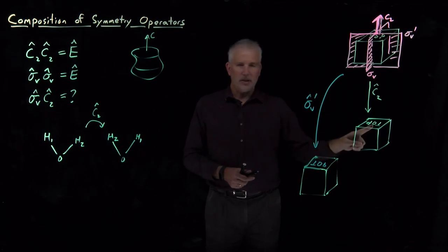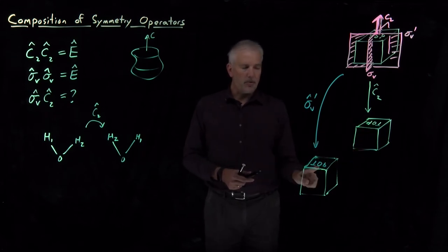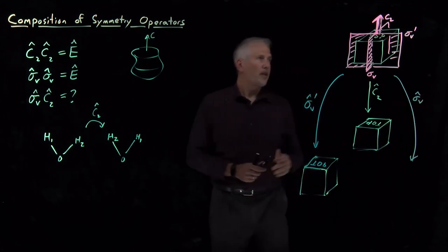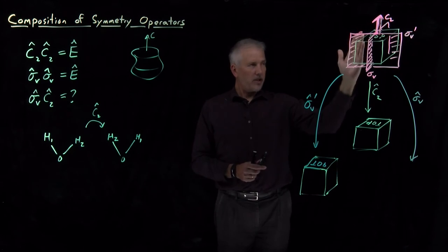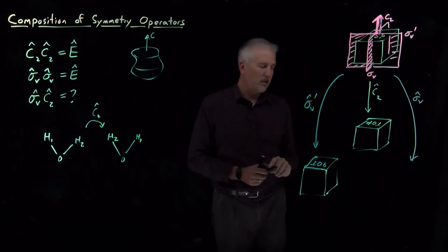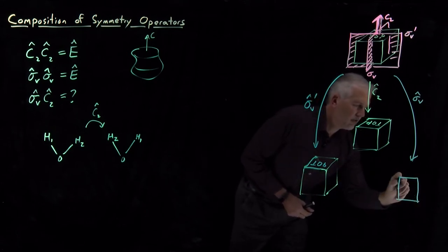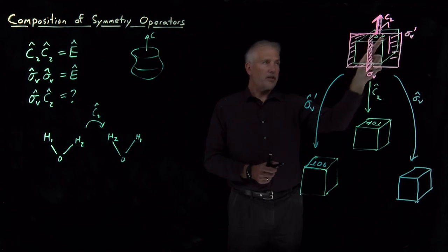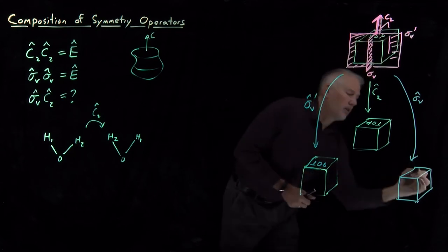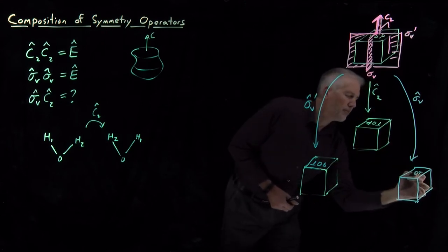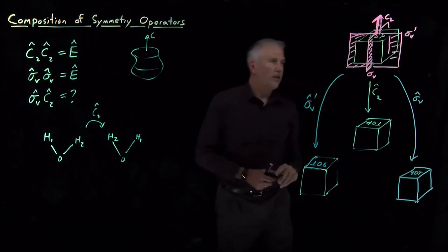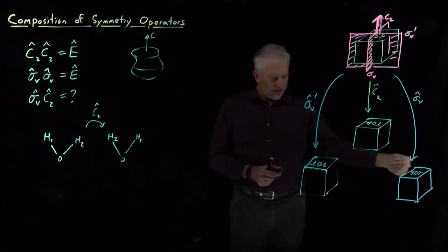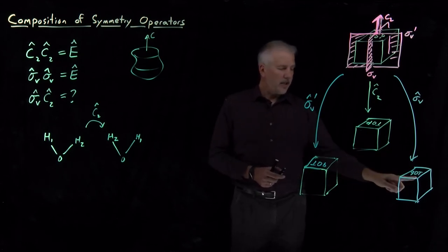For the sigma_v reflection — which divides the cube into left and right halves — reflecting left to right means the left side becomes the right, but the front remains front and the back remains back. The letters T-O-P get reflected left to right: T moves to the right side, O stays in the middle, and P now faces left instead of right. This result is not the same as the C2 result or the sigma_v prime result.